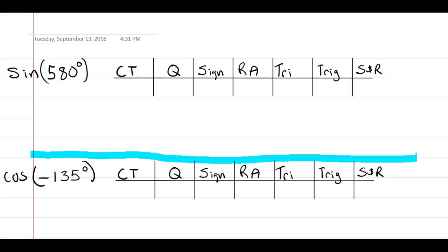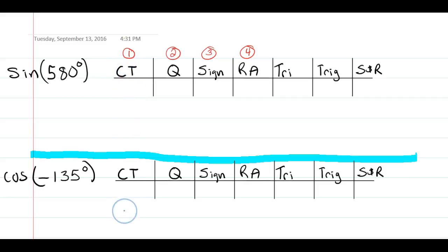We're going to have a number of steps to this. Tonight's homework — this first video — will take us through the first four: finding the coterminal angle, finding the quadrant, using the quadrant to determine the sign of our answer, and finding the reference angle. The first three go really fast. I'll work through the first three examples, then give you a chance to try the fourth on your own.